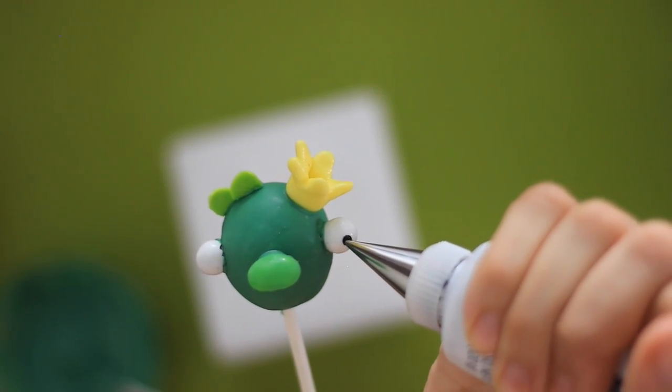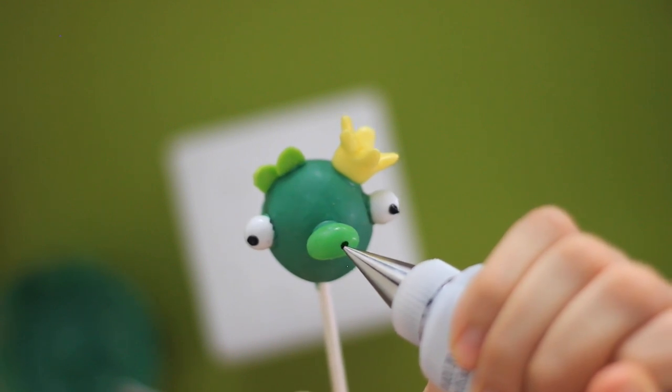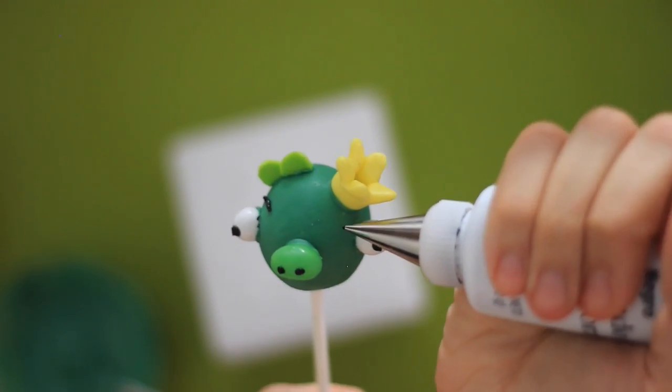Use your black decorating icing with a number one tip to add the eyes, nostrils, and eyebrows.